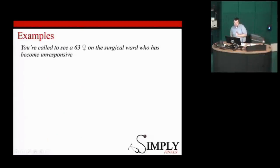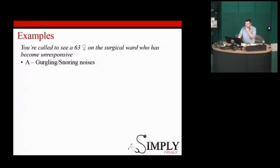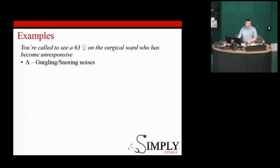You're called to see a 63-year-old lady on the surgical ward who has become unresponsive. Airway — you hear lots of gurgling and snoring noises. Roll her on her side to try and open up that airway, get the suction, have a look. There's nothing there, but a simple airway maneuver resolves the snoring noises. Call for help — pull the emergency alarm at the end of the bed. Never be afraid to pull it; you might get in trouble for not pulling it.